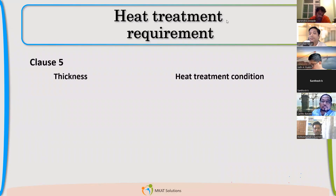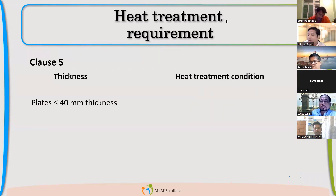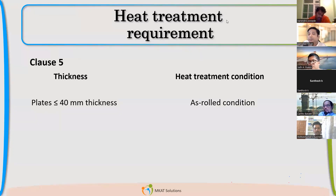Now coming to the next clause, which is clause 5, related to heat treatment. There are a few takeaways from this. The first part is related to thickness less than 40mm. If the plate you are ordering has 40mm or less thickness, you can order it as as-rolled. You don't need to normalize it. The normalizing requirement is not there.